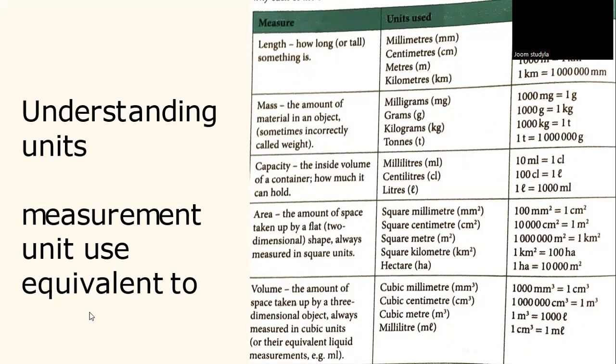100 millimeters to the power of 2 is equivalent to 1 centimeter to the power of 2. 10,000 centimeters to the power of 2 is equivalent to 1 meter to the power of 2. 1 million meters to the power of 2 equals 1 kilometer to the power of 2. 1 kilometer to the power of 2 is equivalent to 100 hectares. 1 hectare is equivalent to 10,000 meters squared.